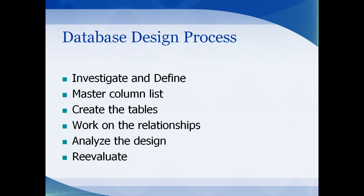When you first decide on creating a database, there are a few things to investigate before actually creating it. First, gather the information and define all of the fields you might have. Next, create a master column list of all the fields you'll need and list any properties, such as whether it's text, numeric, a date, or a long text field. Thirdly, create the tables logically, following the rules of normalization — put everything on one table first, then look for functional dependencies. Work out any relationships, and analyze your design and reevaluate to make sure your data is going to fit in the schema.